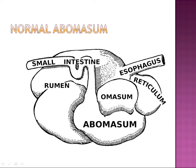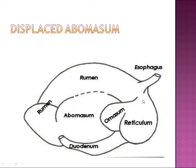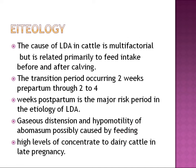Looking at the normal anatomy of the abomasum, we have the abomasum, the rumen, the omasum, and the reticulum. In the case of displaced abomasum, the abomasum has been displaced from its normal anatomical position, and the rumen has also been displaced. We can see the abnormally displaced abomasum clearly.